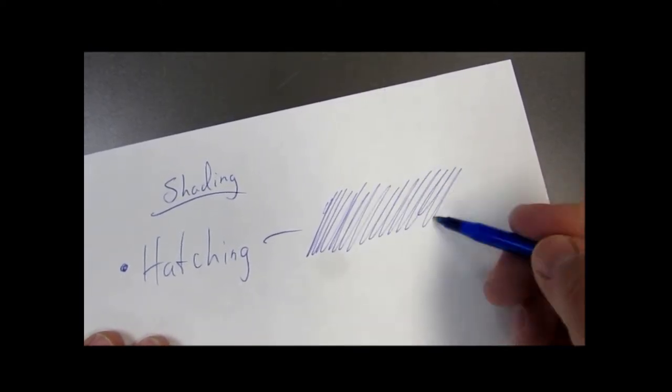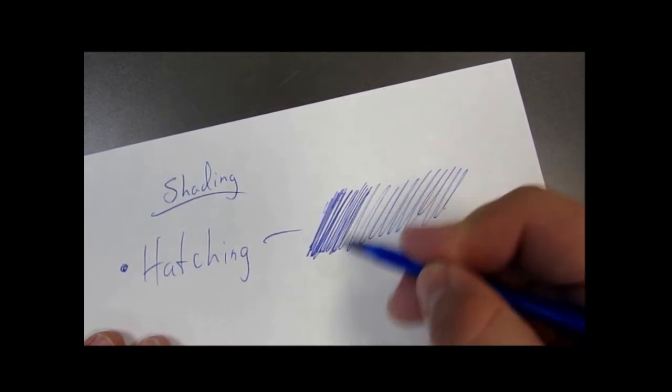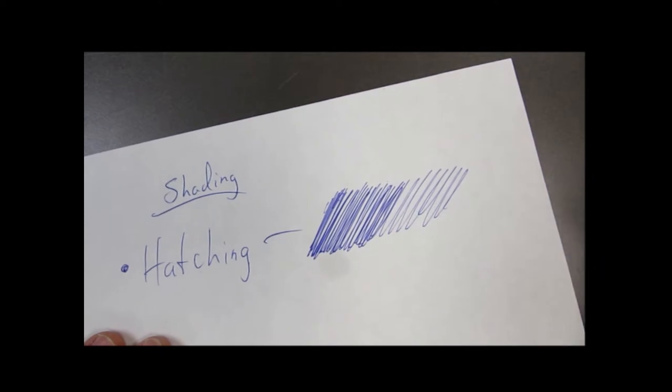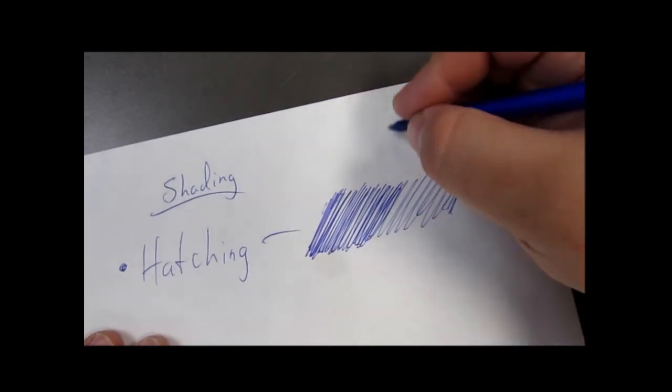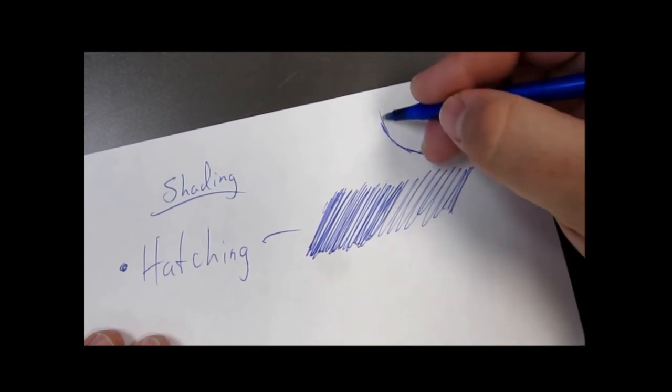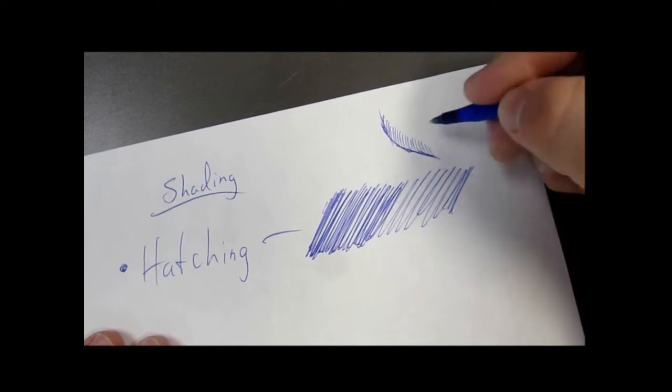We're going to take lines and add them diagonally, one next to each other. Starting off, I'm just quickly throwing some lines apart from each other, going back over it. Notice I'm working in pen here.